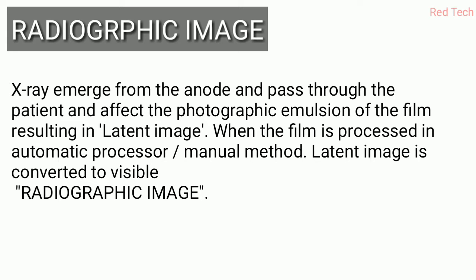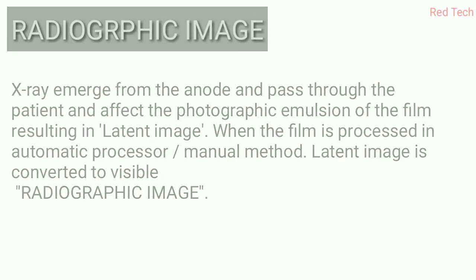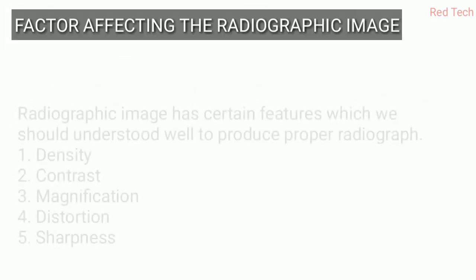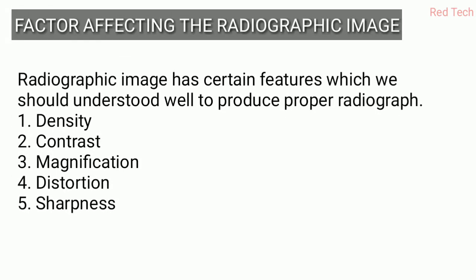That visible image is what we call the radiographic image. The latent image is temporary and cannot be seen by us. After processing, the latent image is converted into the radiographic image. You should also remember the point about photographic emulsion.